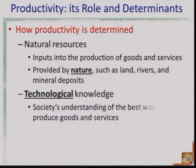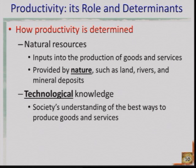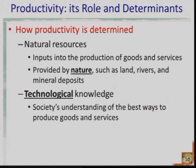The third determinant of productivity is natural resources. Your author mentions renewable natural resources — such as forests and trees, which can be replanted — and non-renewable resources, like oil. The fourth determinant is technological knowledge: better methods of farming, better equipment, better genetically engineered seeds — all better ways of producing goods and services.